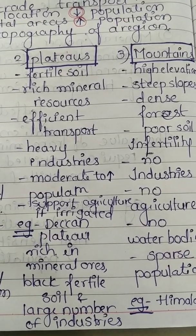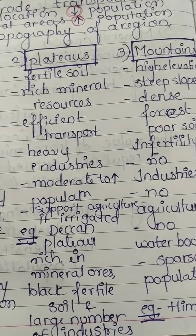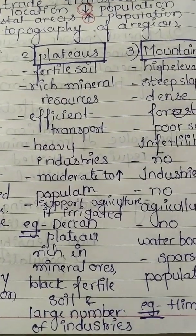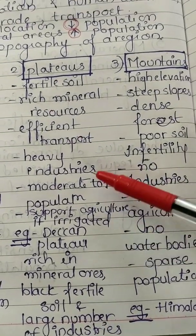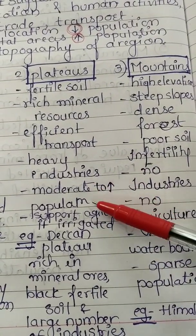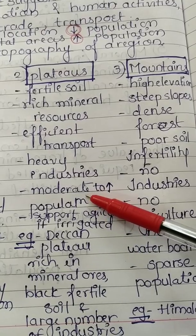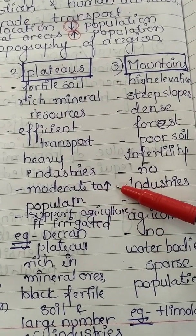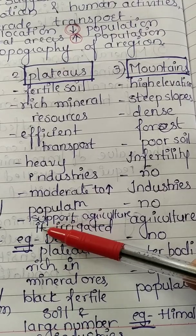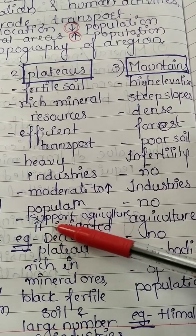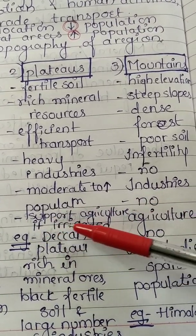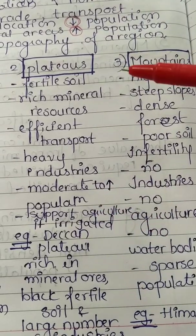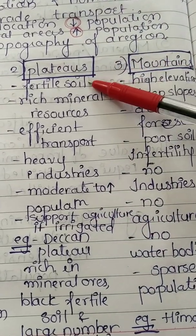There is a good, efficient transport system in plateaus, and because of that there is heavy industrialization. Plateaus have a population ranging from moderate to high — some plateaus have moderate population, some have high population — and they also support agriculture if the irrigation facility is good.